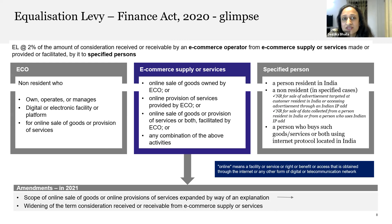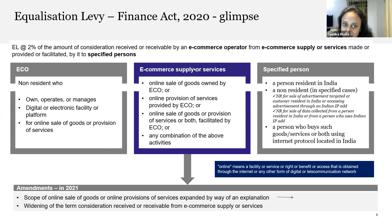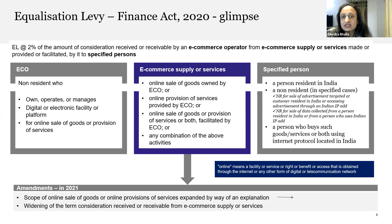Certain amendments were made in Finance Act 2021. The scope of 'online sale of goods' was vital. The definition of 'e-commerce supply or services' under Section 164 clause (cb) of the Equalization Levy Act was amended by Finance Act 2021. Also, the consideration clause in Section 165A — the charging section — was amended by Finance Act 2021, which we will discuss in the next slide.